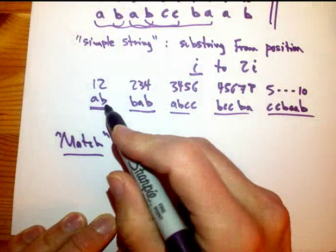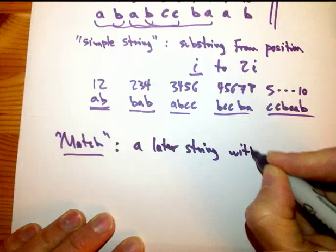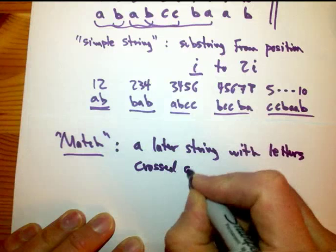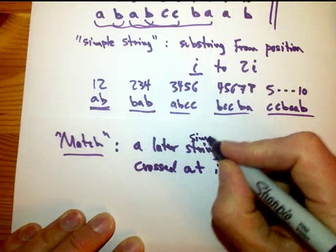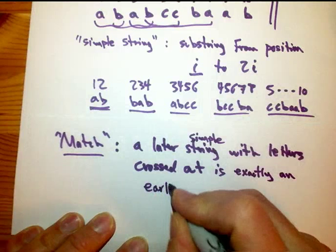A match is when a later simple string with letters crossed out is exactly one of the earlier simple strings. So that would be a match between those two simple strings.